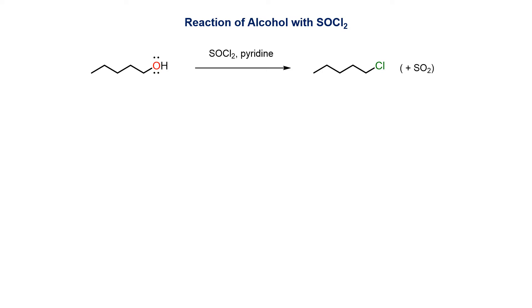The versatile method for the conversion of primary alcohols to alkyl chlorides is the use of thionyl chloride with, on some occasions, pyridine. This protocol avoids the use of strong acids such as hydrochloric acid, which is often incompatible with other functional groups.